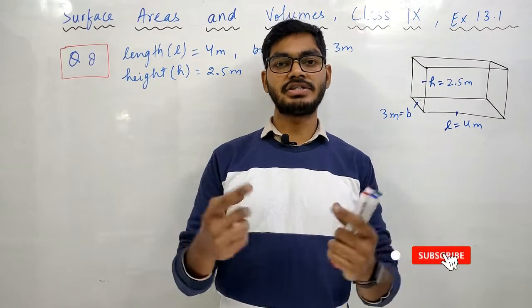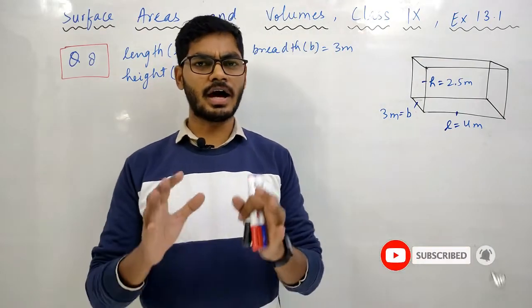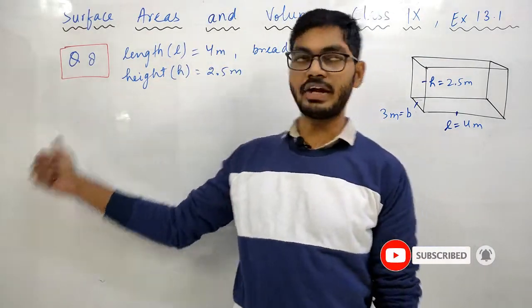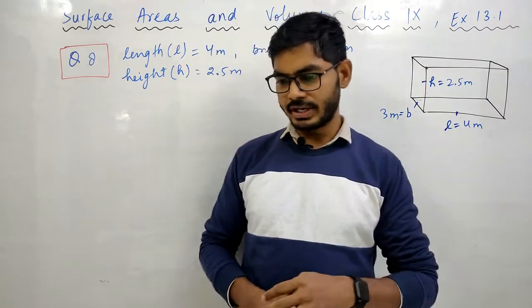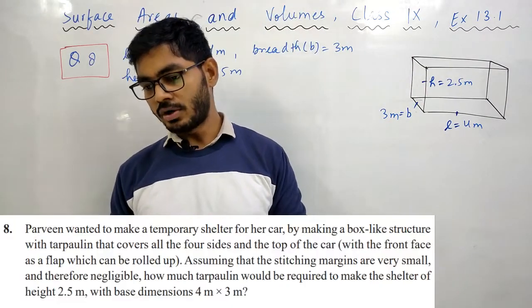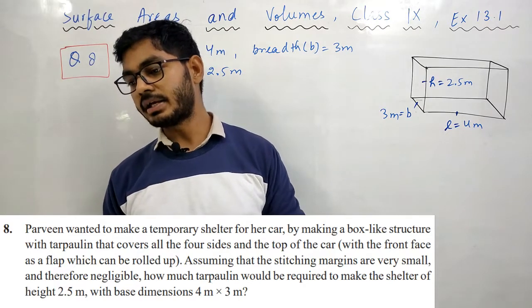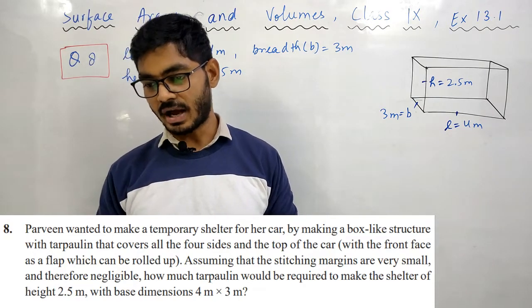Hello guys, this is Rajiv and you are learning on AIM's Academy. Question number 8 of Exercise 13.1, Class 9. Question reads: Praveen wanted to make a temporary shelter for her car by making a box-like structure with tarpaulin